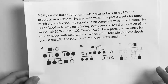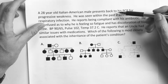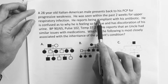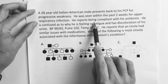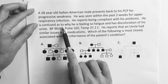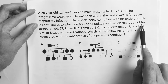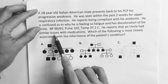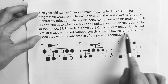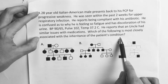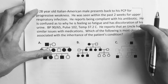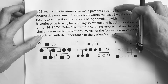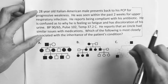A 28-year-old Italian-American male presents to his primary care provider for progressive weakness. He was seen two weeks prior for an upper respiratory infection and reports being compliant with his antibiotic. He is confused about why he is feeling so fatigued and has discoloration of his urine. Blood pressure 90/65, pulse 102, temperature 37.2. He reports that an uncle had similar issues with medications. Which of the following is most closely associated with the inheritance of this patient's condition? This is a classic Step 1 question — they expect you to get the diagnosis, know the inheritance pattern, and match it to a pedigree.